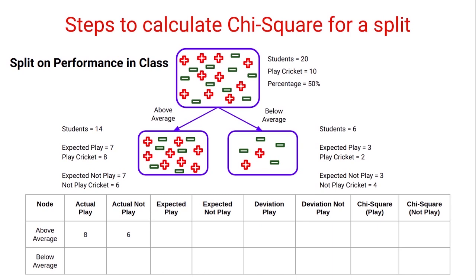The actual values for the above-average node are: 8 students who are above average play cricket and 6 do not. The expected values are 7 for both play and not-play, as we've discussed. Similarly, for the below-average node, 2 students play cricket and 4 do not, with a total of 6 students below average. The expected values will be 3 and 3 for play and not-play respectively.